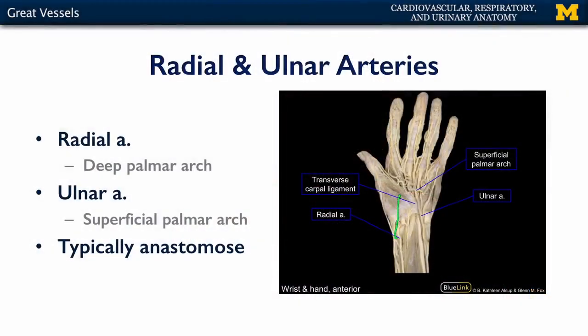The radial artery, moving along the lateral aspect of the forearm, is a major pulse point — you can determine blood flow to the hand and pulse rate by palpating your radial artery. That artery goes deep within the hand and gives rise to the deep palmar arch. The ulnar artery, which is more medial, gives rise to the superficial palmar arch. These two arteries anastomose between the arches to provide good collateral blood flow to the hand, though in some individuals these anastomoses are not present.